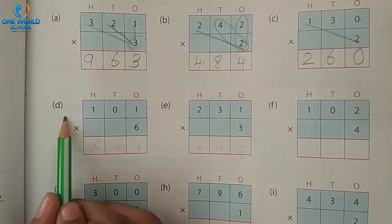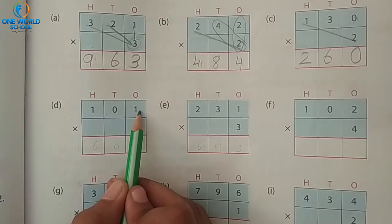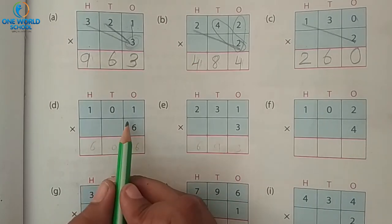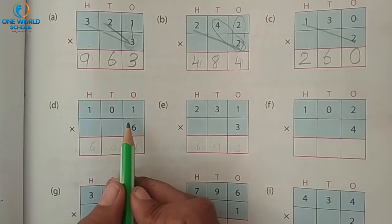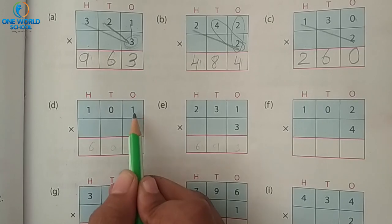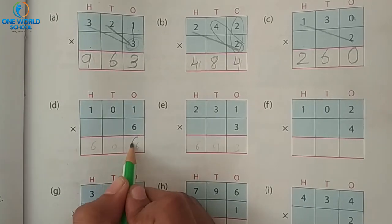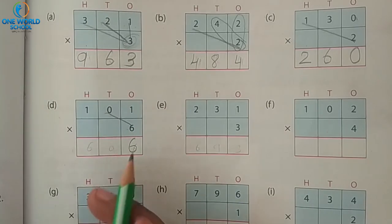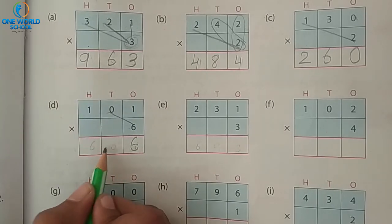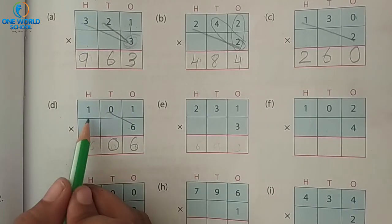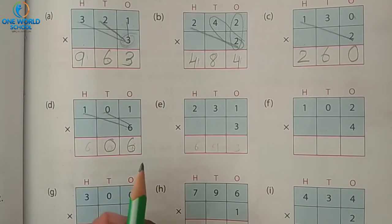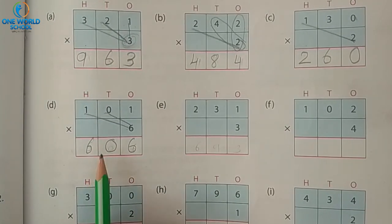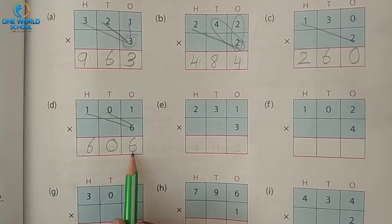Now number D: one hundred one multiplied by six. Which place will we take first? Ones place: six ones are six. Now tens place: six zeros are zero. Now hundreds place: six ones are six. So what is your answer? Six hundred six.